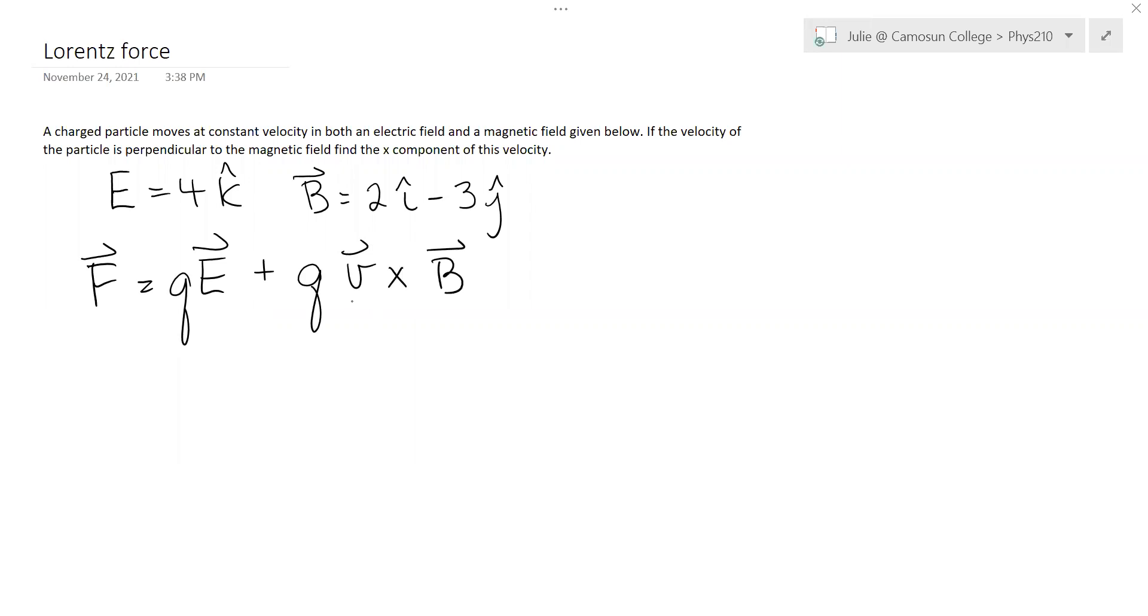So it's this velocity of the particle that we've been told is constant. And if the velocity is constant, that implies the acceleration is zero, which means the net force is also zero. So in fact, the left-hand side of that equation is zero. It's QE plus QV cross B. So that simplifies things quite a bit.